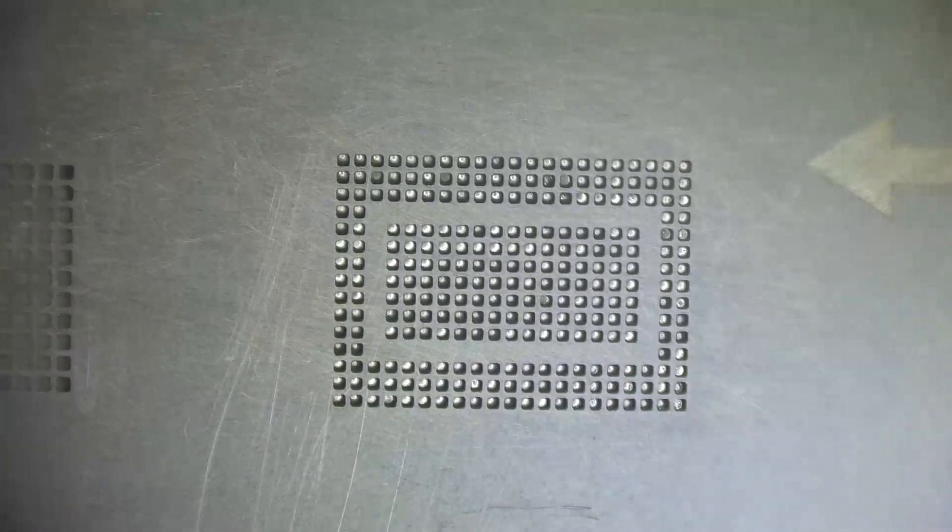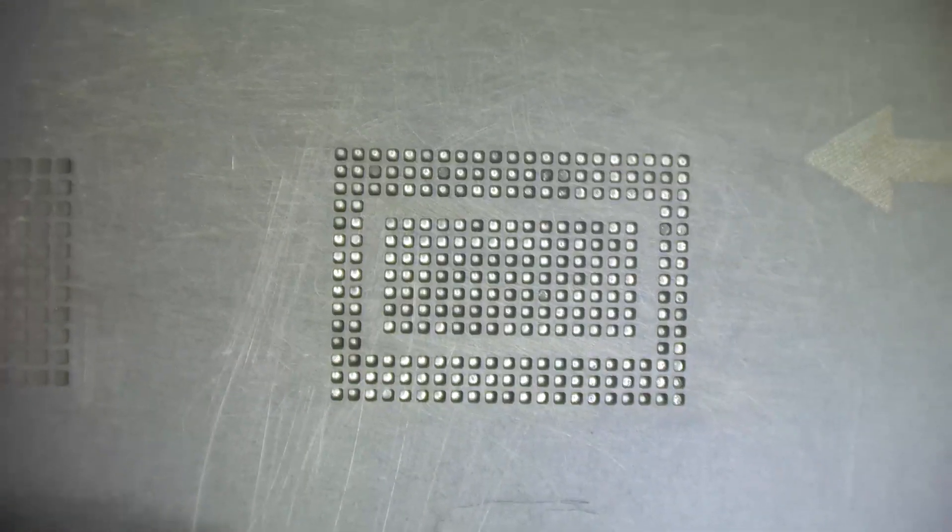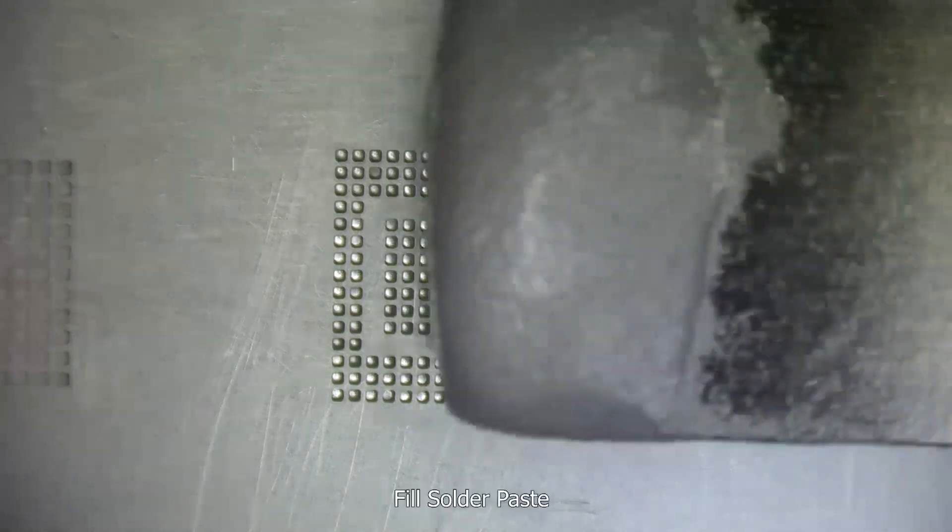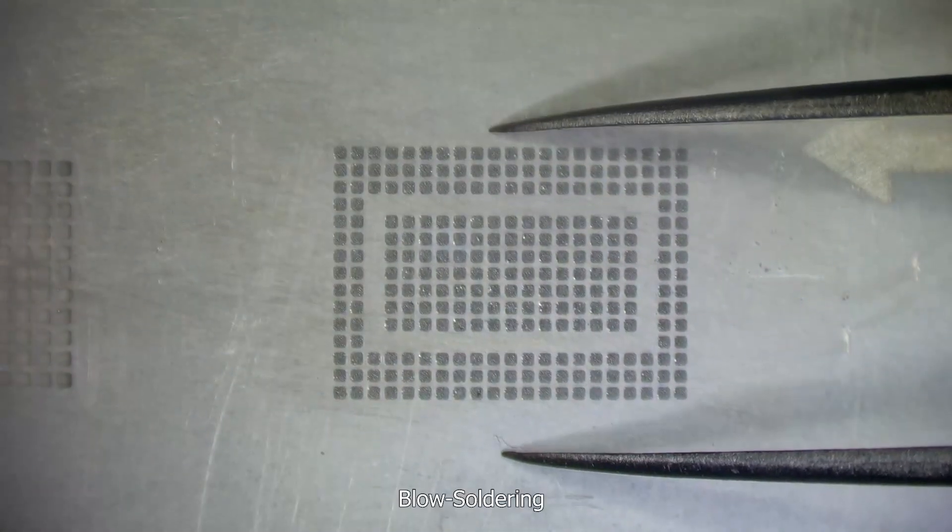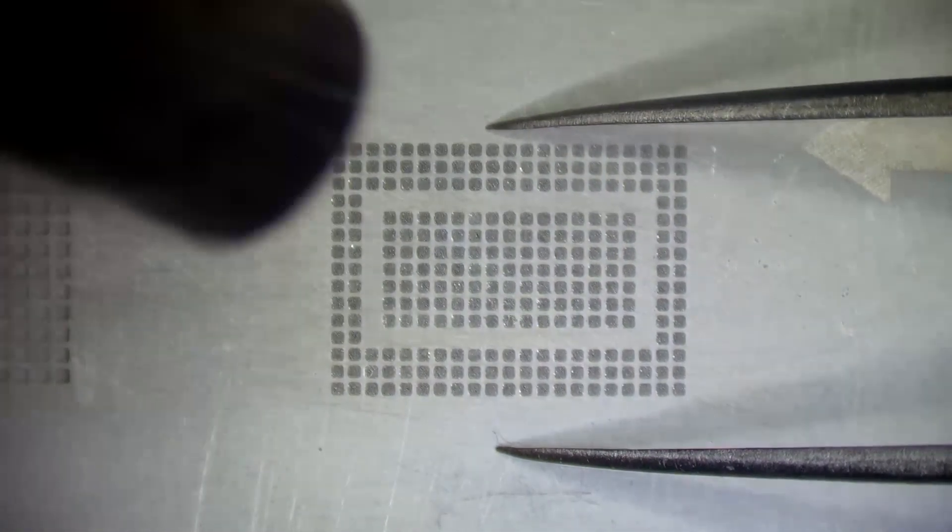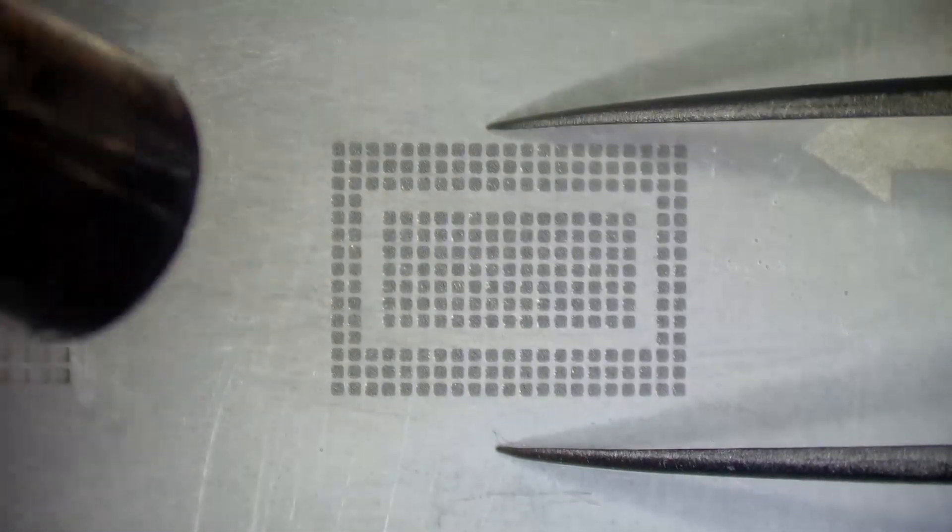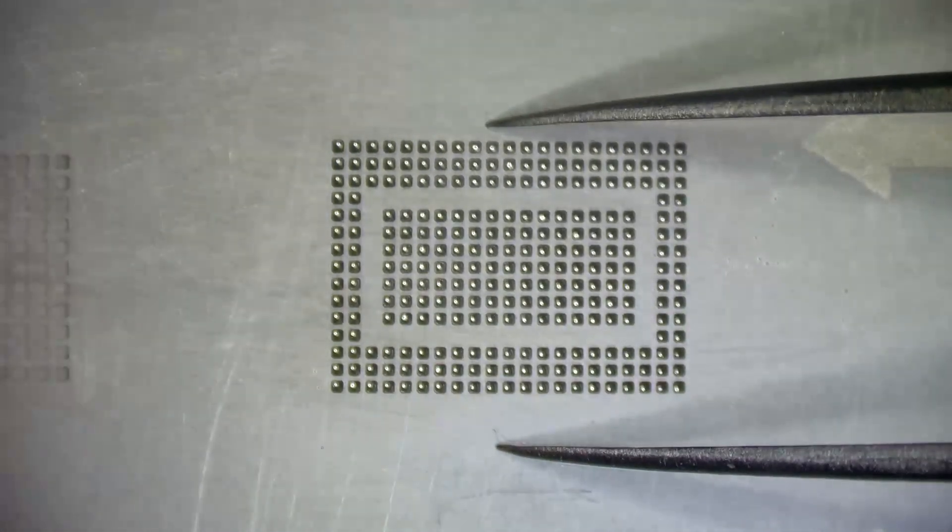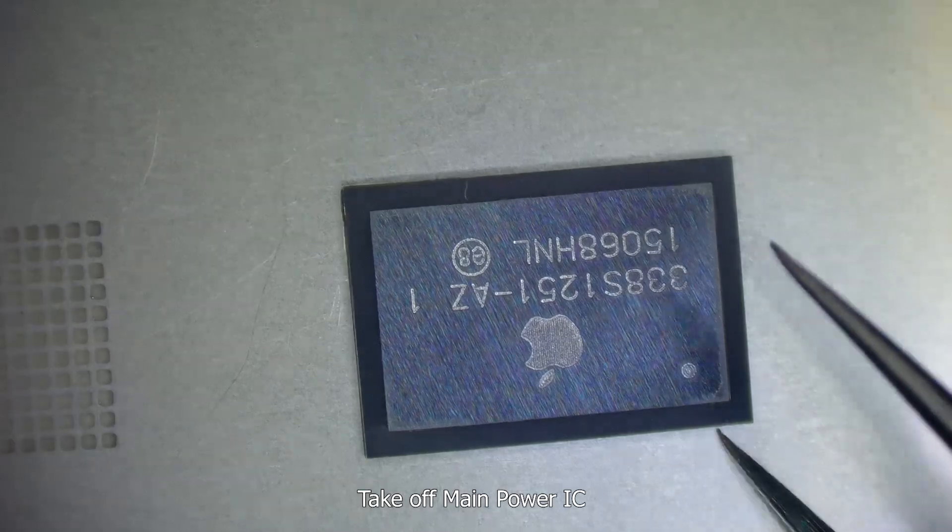Matching stencils. Fill solder paste. Blow soldering. Take off main power IC.